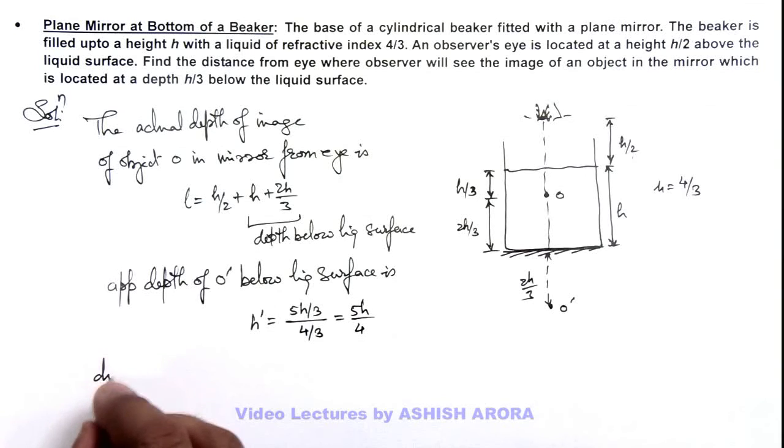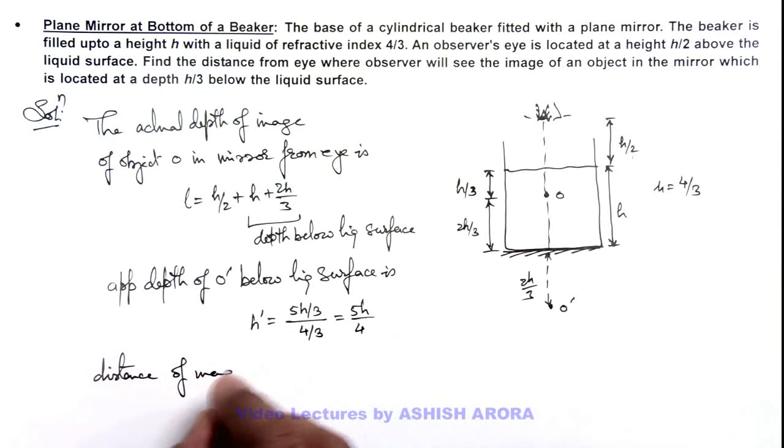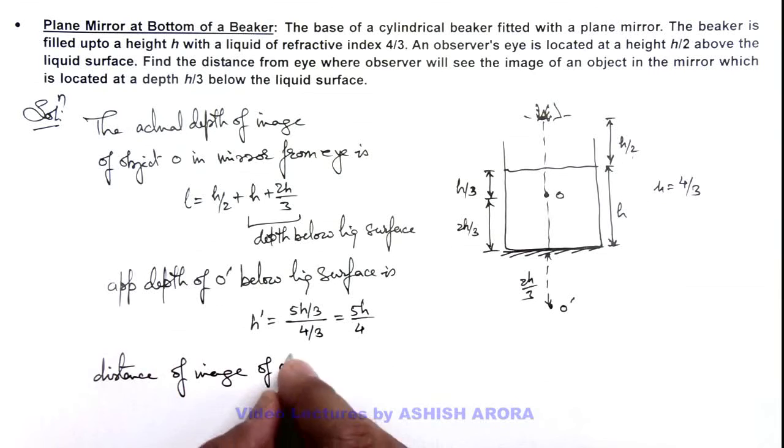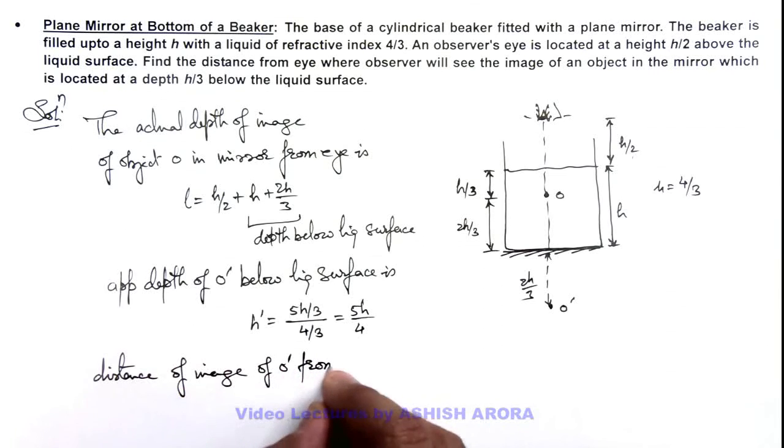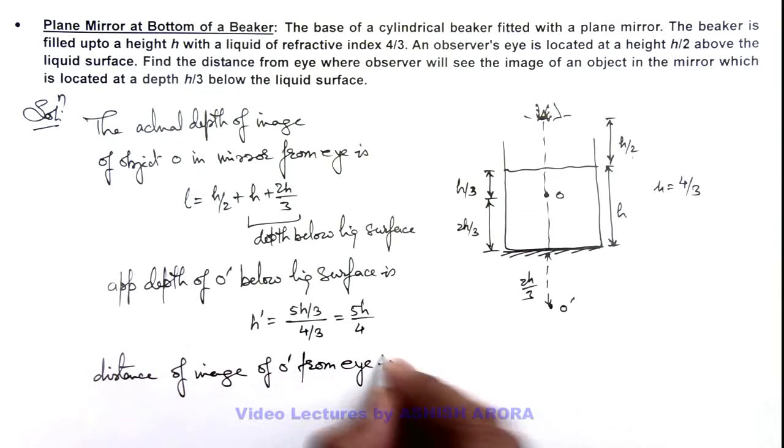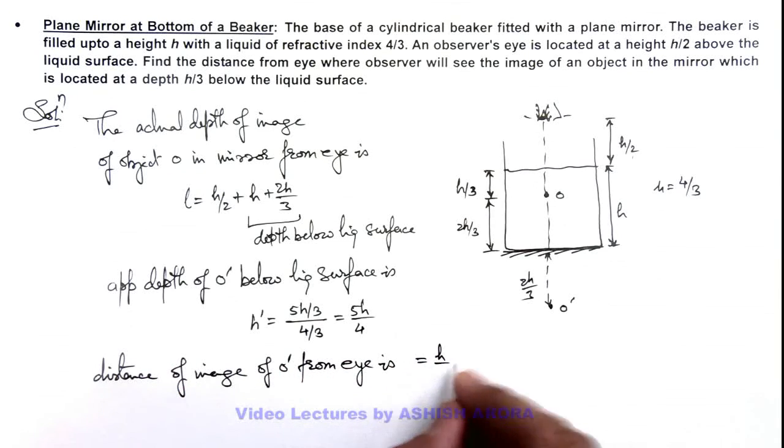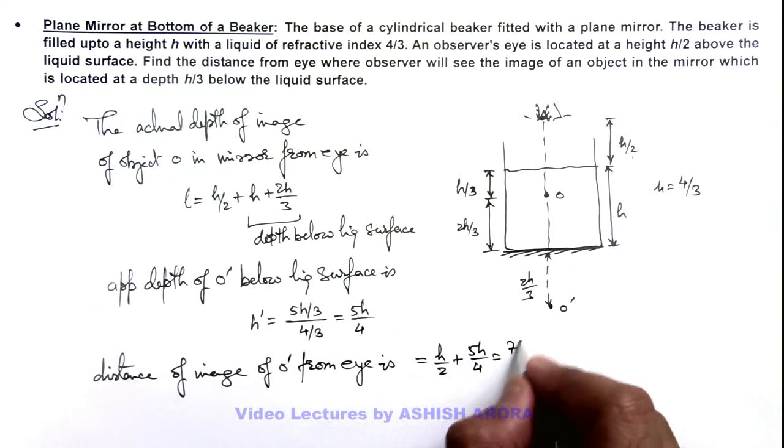So distance of image of O' from I is: this can be written as h/2 plus 5h/4. This is equal to 7h/4. That will be the answer to this problem.